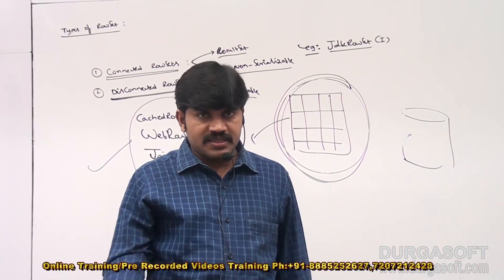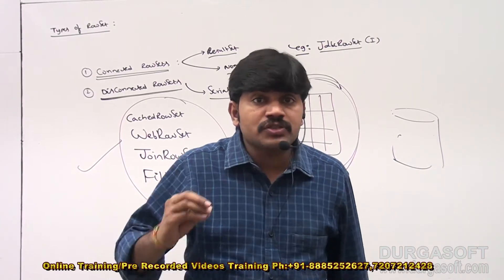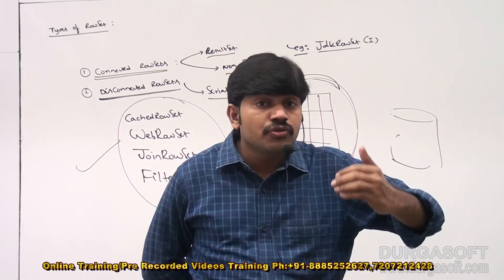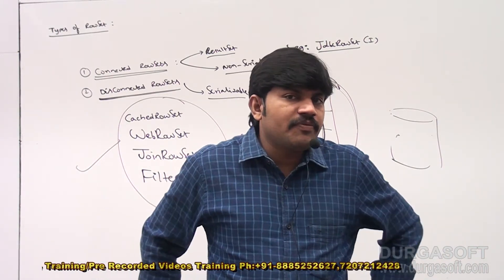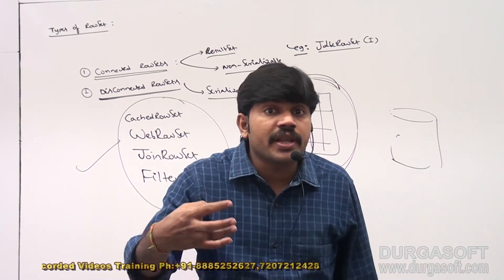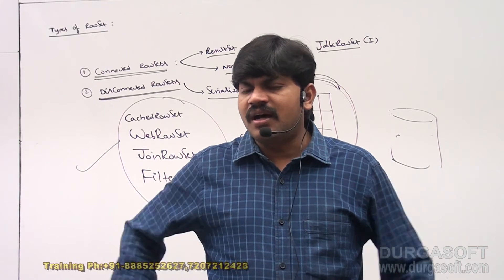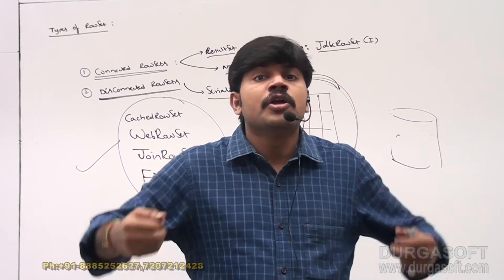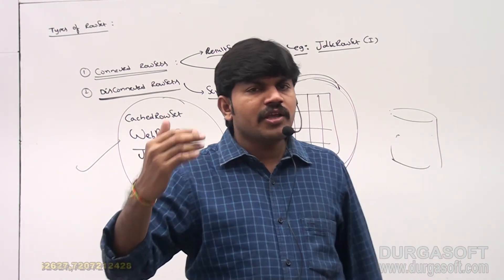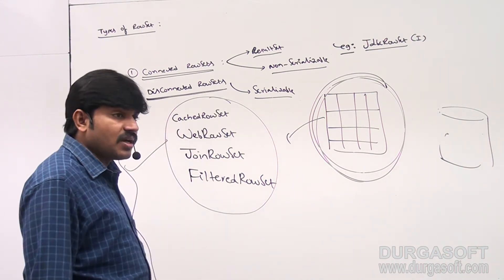To recap: without having a database connection we can't access the RowSet — such RowSets are connected RowSets. Connected RowSets are not serializable; you can't send a connected RowSet object across a network. Example: JdbcRowSet. For disconnected RowSets, without having a database connection we can access the RowSet object. Disconnected RowSets are serializable. Examples: CachedRowSet, WebRowSet, JoinRowSet, FilteredRowSet.